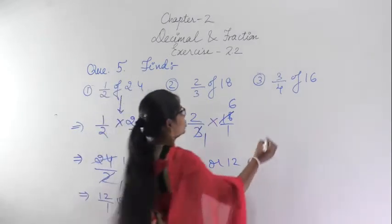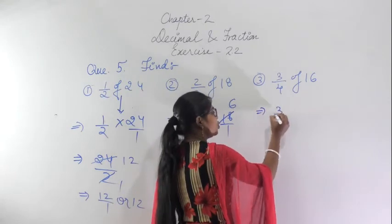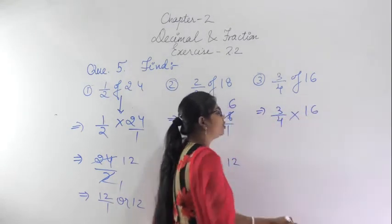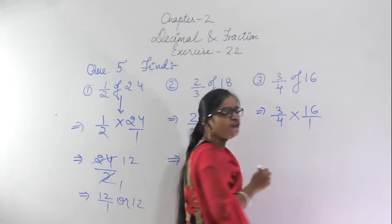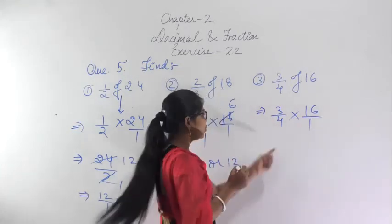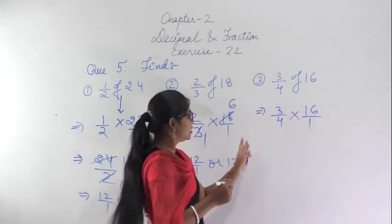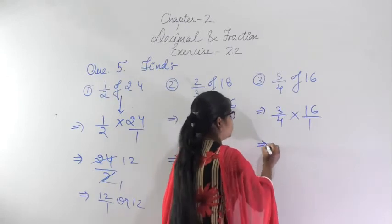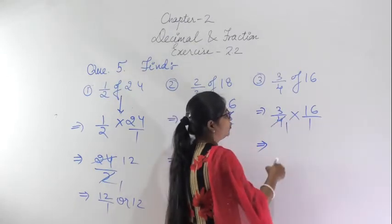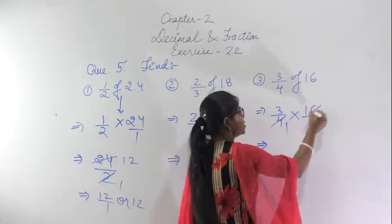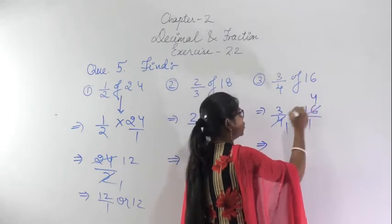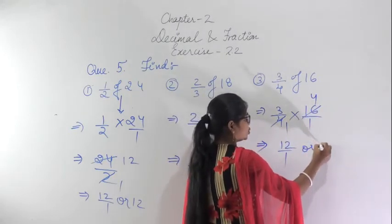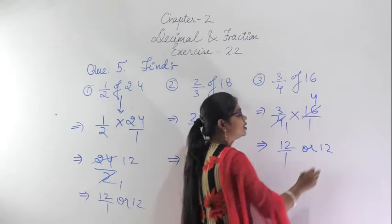For the third question: 3/4 of 16 means multiply 3/4 by 16/1. Write in fraction form; cancel what can be cancelled. 4 ones are 4, 4 twos are 8, 4 fours are 16 — so 4 divides into 16. The answer is 12.